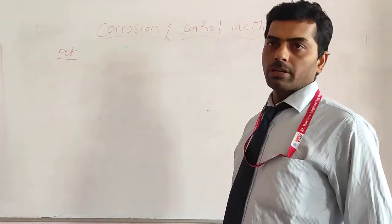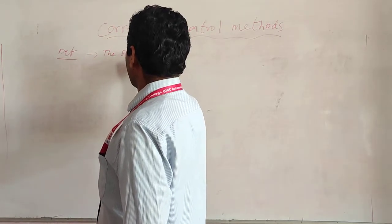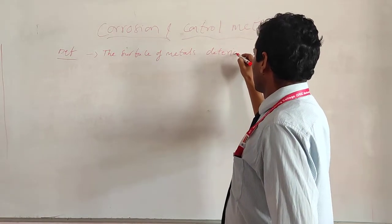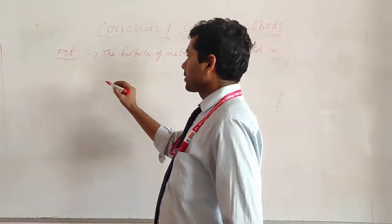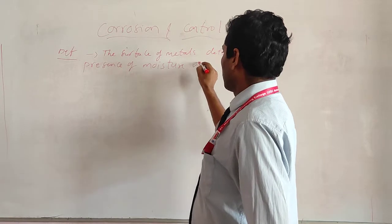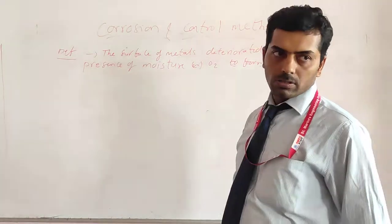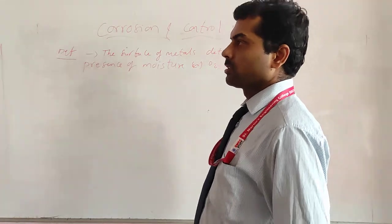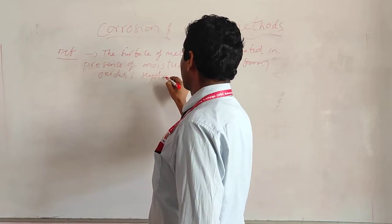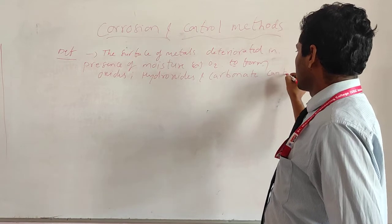Different types of corrosion may be there. Basically, you can define corrosion as the deterioration of the surface of metals in the presence of moisture or oxygen to form oxides, hydroxides, or carbonates. This is nothing but corrosion.